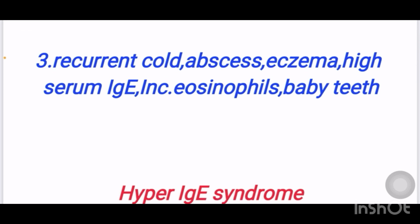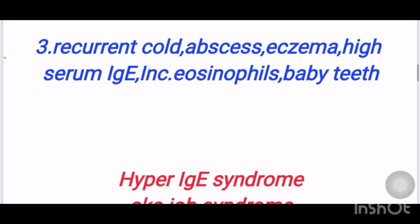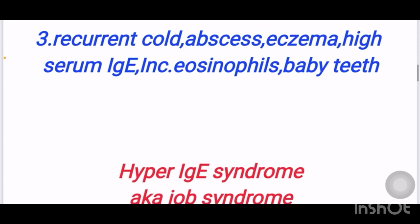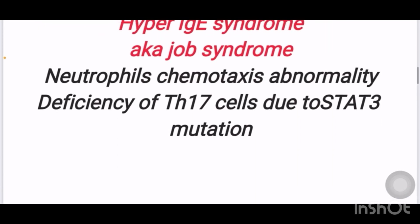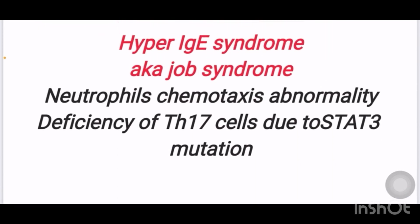Third scenario: a patient complains of recurrent cold abscesses, eczema, high serum IgE levels, increased eosinophils, and retained baby teeth. This gives a hint of Job's syndrome, also known as hyper-IgE syndrome. It is due to neutrophil chemotaxis abnormality. There will be a deficiency of TH17 cells due to STAT3 mutation.